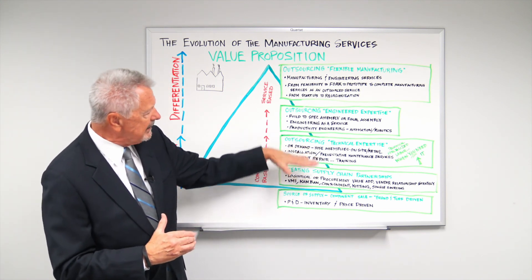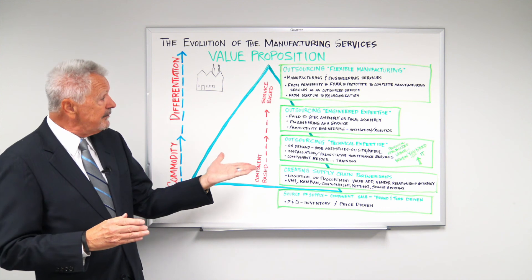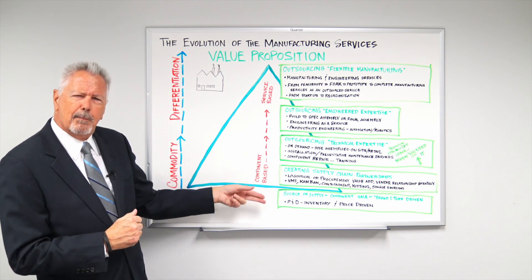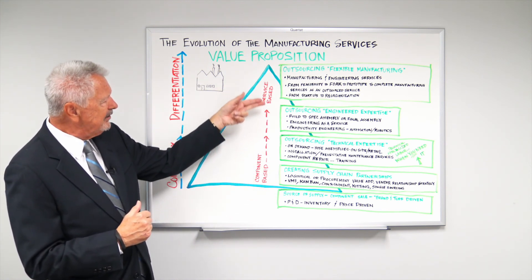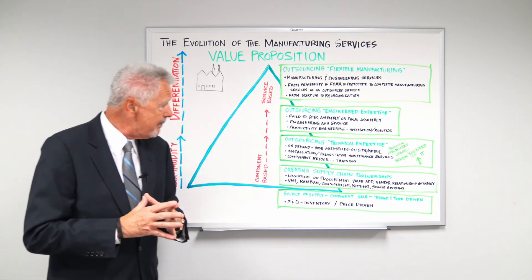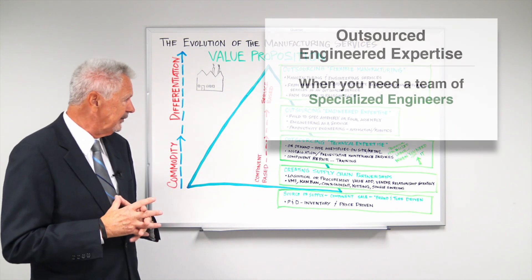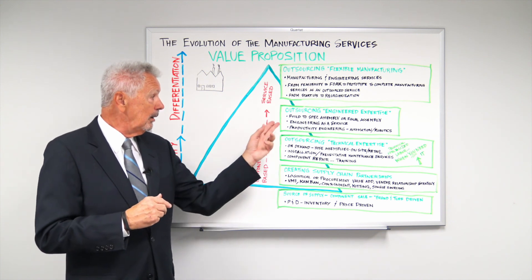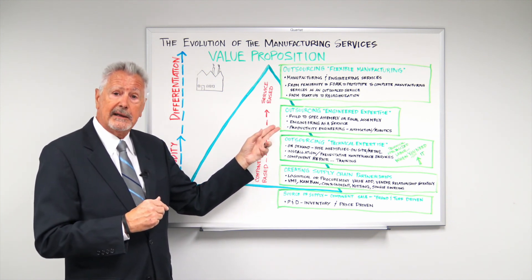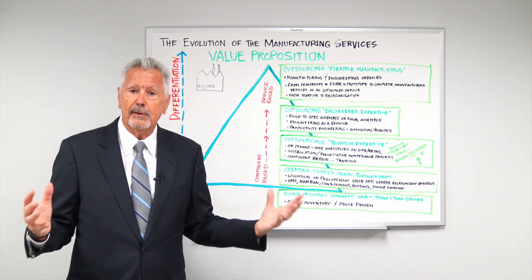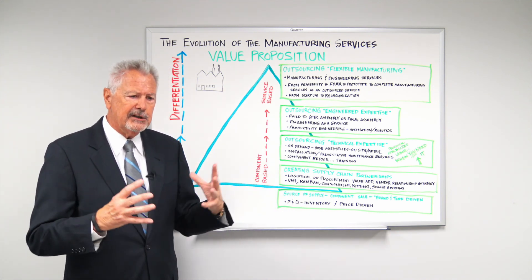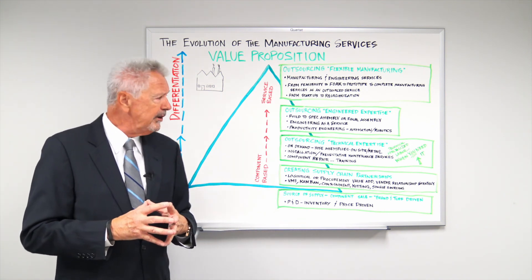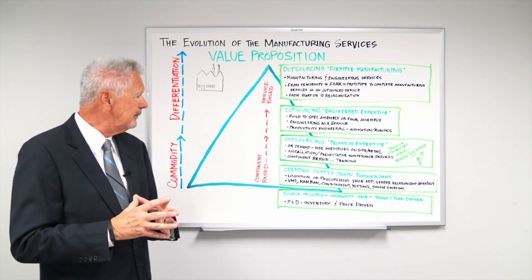So that's that next level up of the value proposition. And if you continue down or up that path would be a better way to put it, you're now moving kind of from a component-based service to a complete service-based business model. And the next step up is outsourcing that engineering expertise. So that could be anything from building a one-of-a-kind or a final assembly for a customer. Could be provide engineering as a service. Because in a lot of cases customers need someone to come in and do a feasibility study. Or they might need someone to come in and do a reality check.